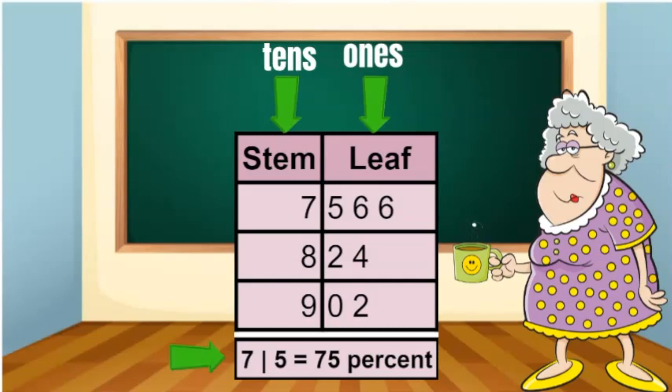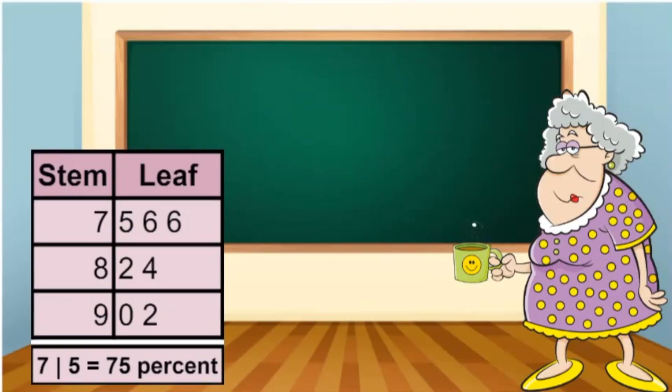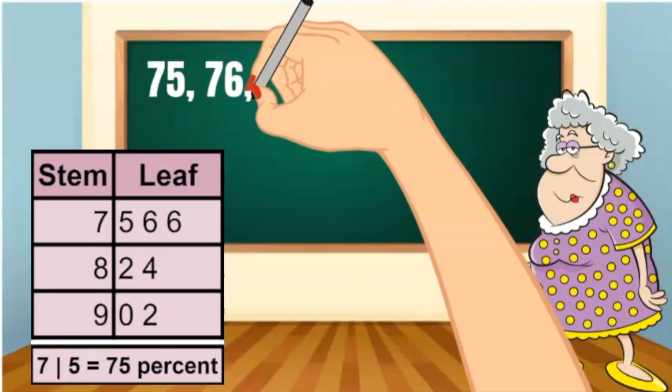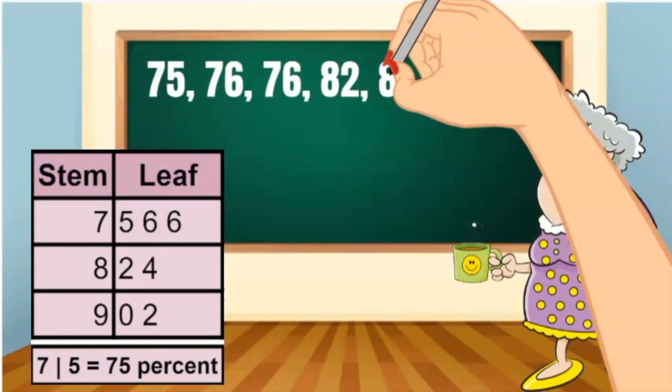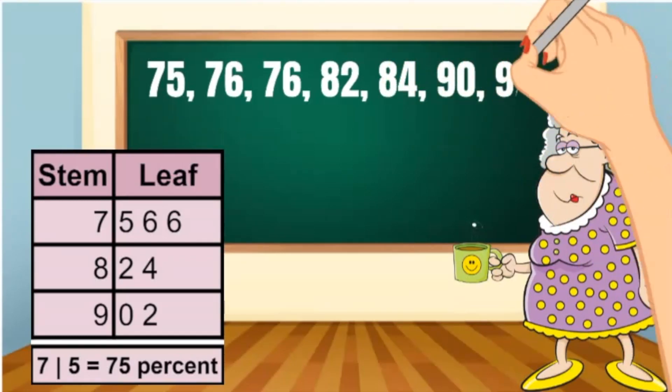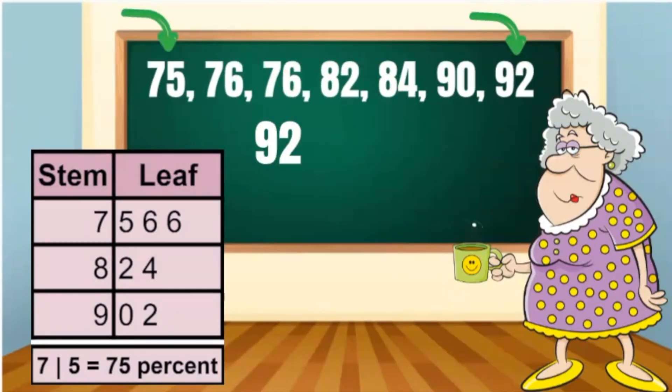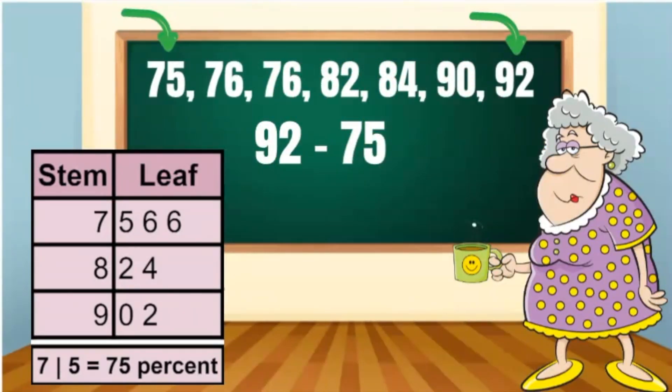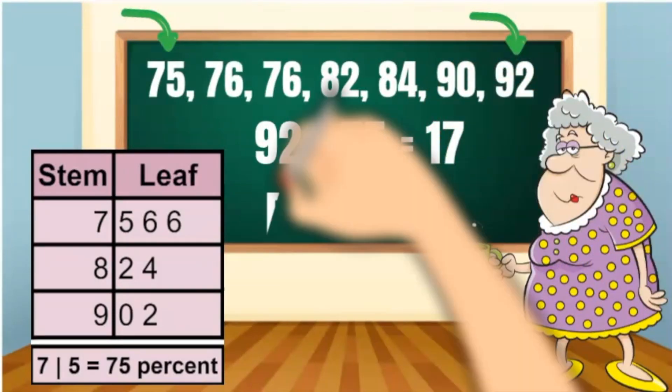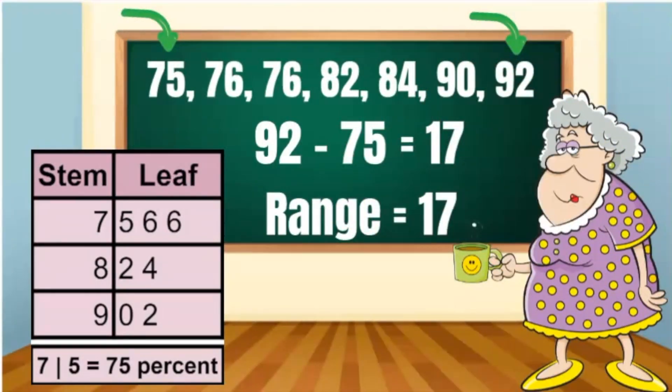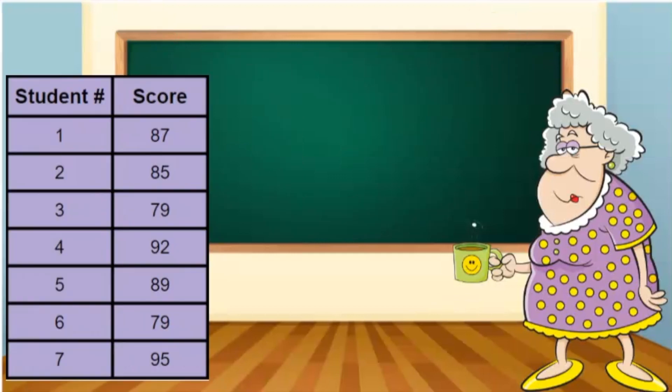This stem and leaf plot represents the values 75, 76, 76, 82, 84, 90, 92. Remember, to find the range, subtract the greatest value, 92, minus the smallest value, 75. That equals 17. The range for this data is 17.